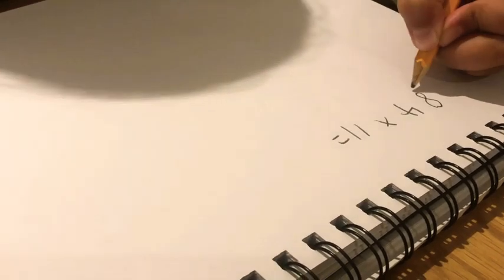So now we ignore the 11 and focus on 84. So the ones goes in the ones place, which is 4. It stays as it is.